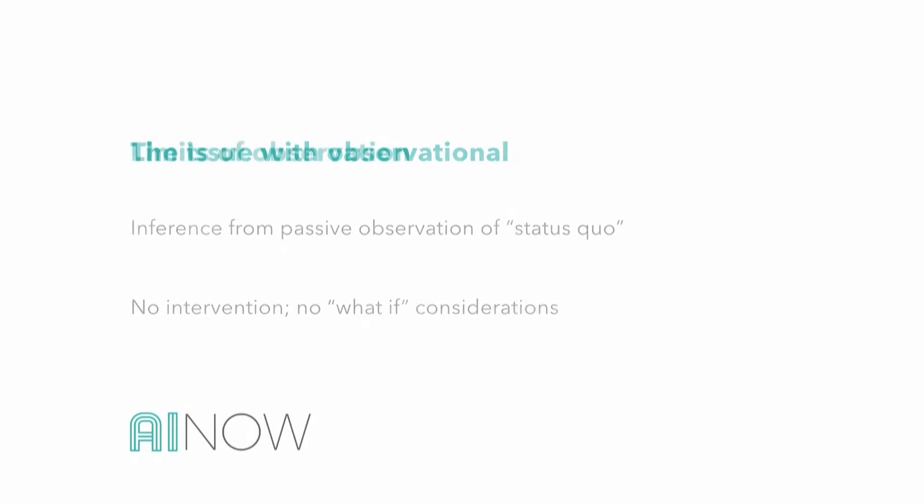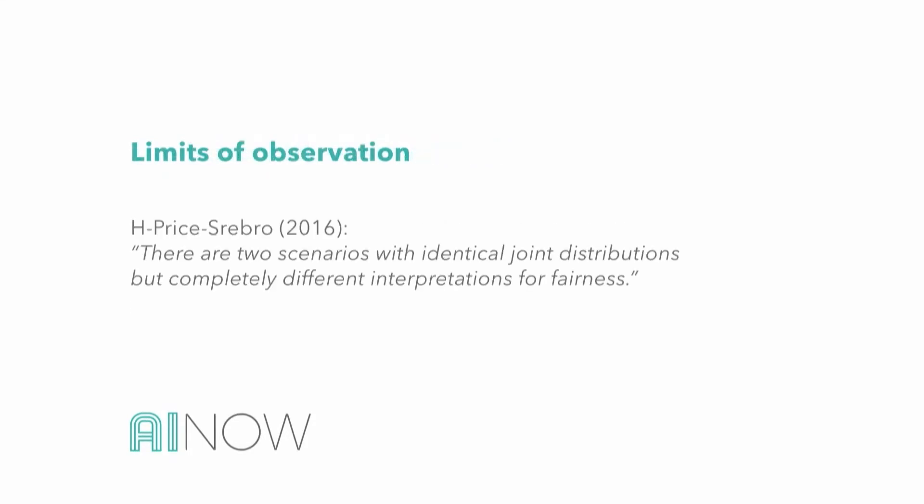That's why it's such a limited approach. With my collaborators Eric Price and Nati Srebro, we turned this into a theorem by constructing two different worlds — two different scenarios which map to the same joint distribution over features, outcome, and predictor, but have completely different interpretations for fairness. They're completely different worlds from the perspective of fairness, but map to identical joint distributions. No observational criterion in the world is going to tell them apart, no matter how sophisticated your probability statement.